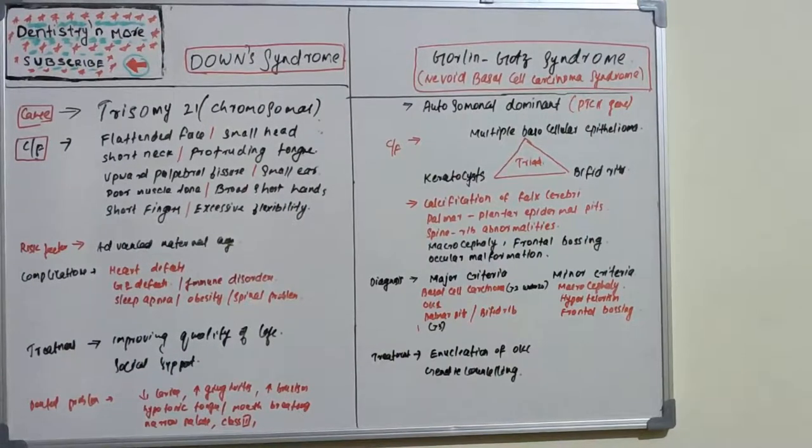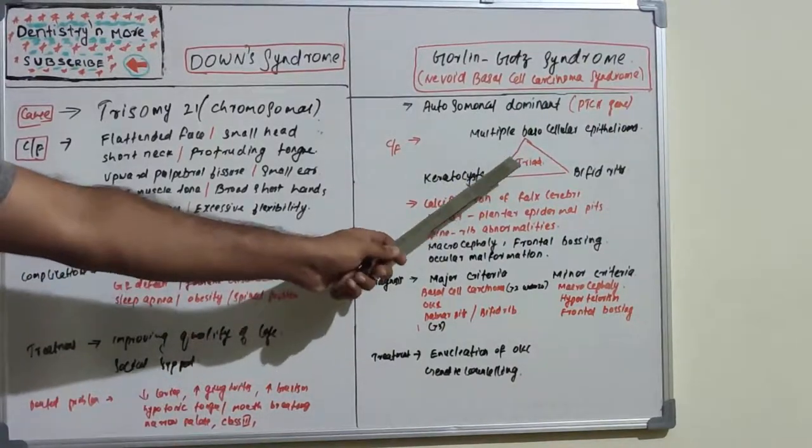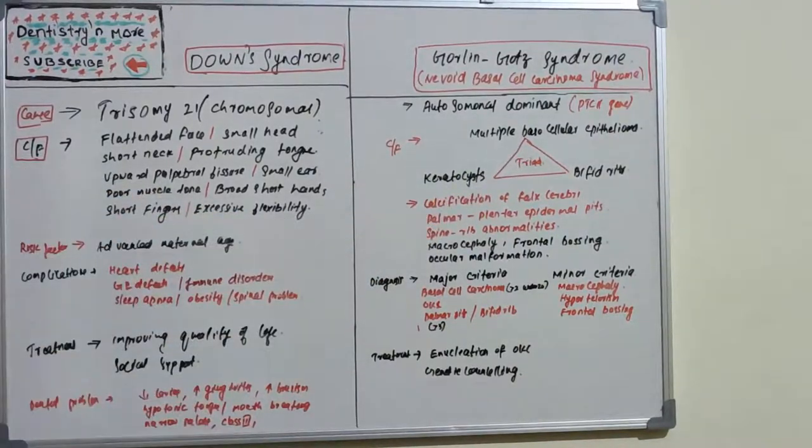Down syndrome is also known as trisomy 21, and Gorlin-Gott syndrome is an autosomal dominant syndrome which has a triad of classic symptoms. Now let's see what these two disorders are.